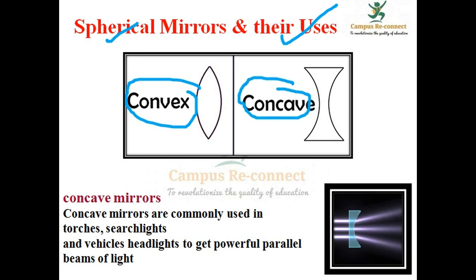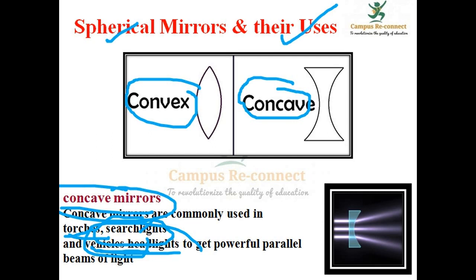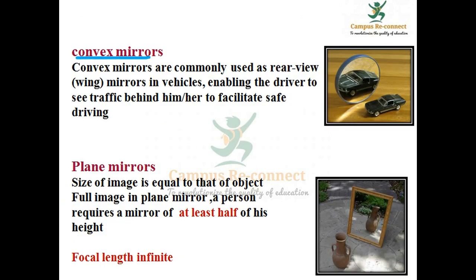Concave mirror and convex mirror. Concave mirror is commonly used in torch and searchlight, headlights and vehicle headlights. Convex mirror produces a small image and covers a large area of the object.